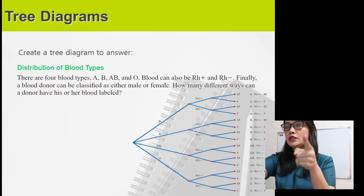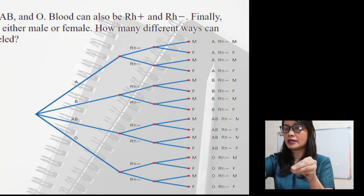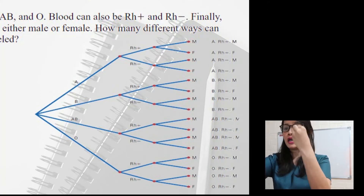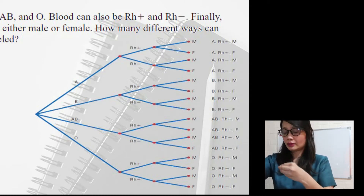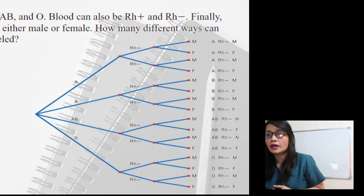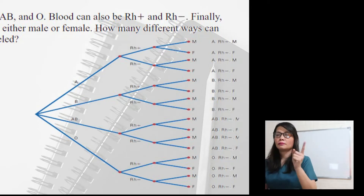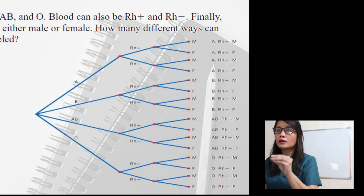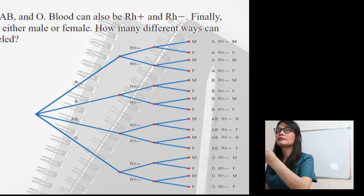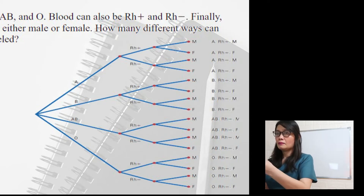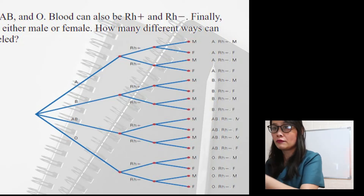So the main point is the donor. The donor can be classified in four blood types: type A, type B, type AB, and type O. If the donor is type A, blood can also be RH positive and RH negative. Then you need to identify if the donor is female or male.